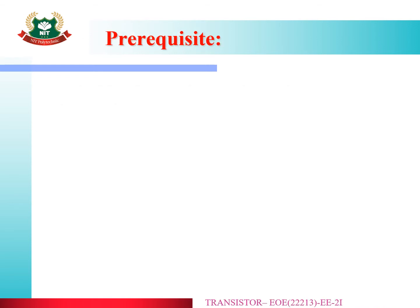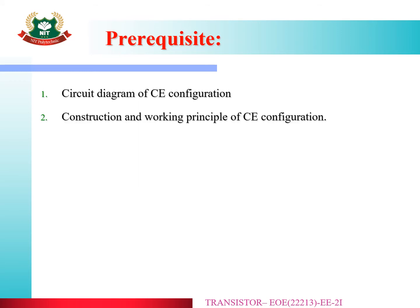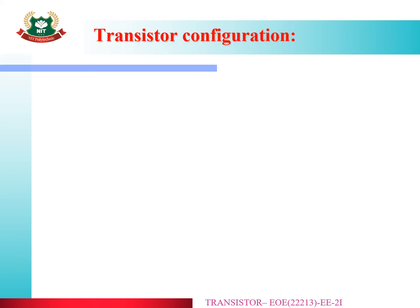In the last lecture, we studied the circuit diagram of Common Emitter Configuration and the working principle of Common Emitter Configuration. In this lecture, we are going to study the Common Collector Configuration. As we know, transistor configurations can be divided into 3 different types.